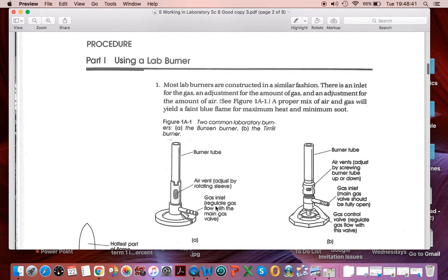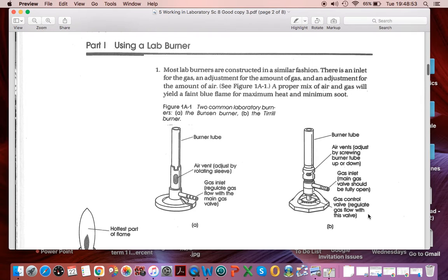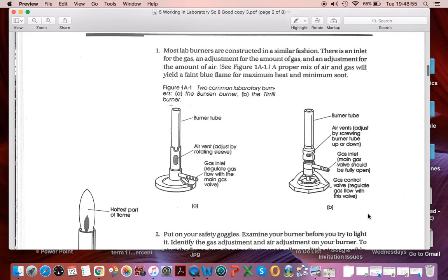So for the first part, we're going to be using a lab burner, and one of the things you're going to have to do is sketch it. Although we have both types of lab burners, B is the one you're going to want to sketch, because that's the one we use in the classroom. So we have to get to know how to use a lab burner, and also different parts of it.